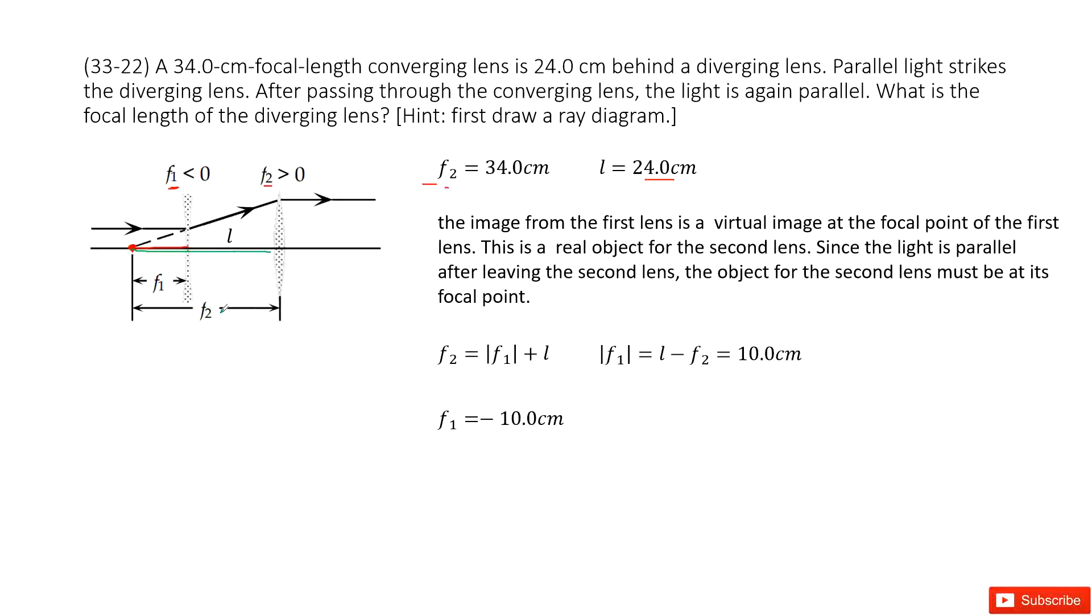And this F2 is just the focal length for the converging lens. And the distance, this one is L. So we can write out this equation. F2 equals F1 plus L.